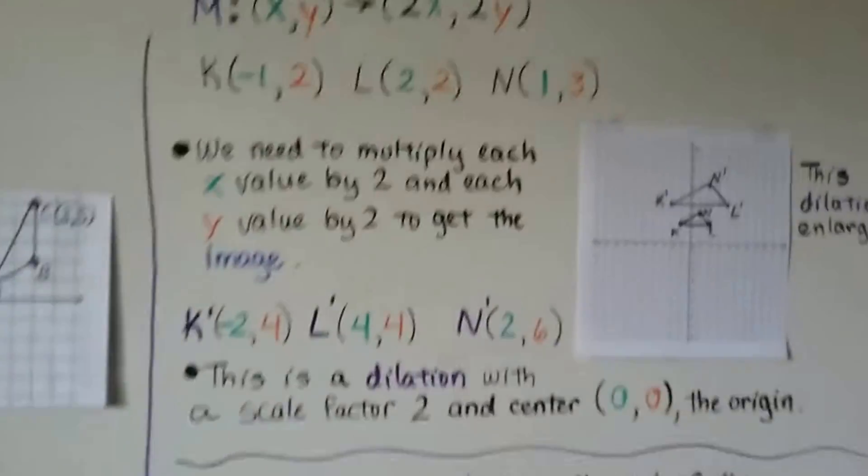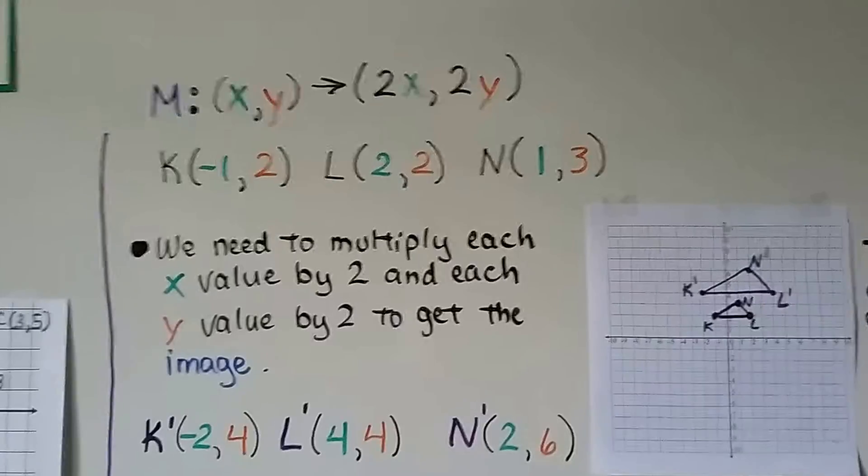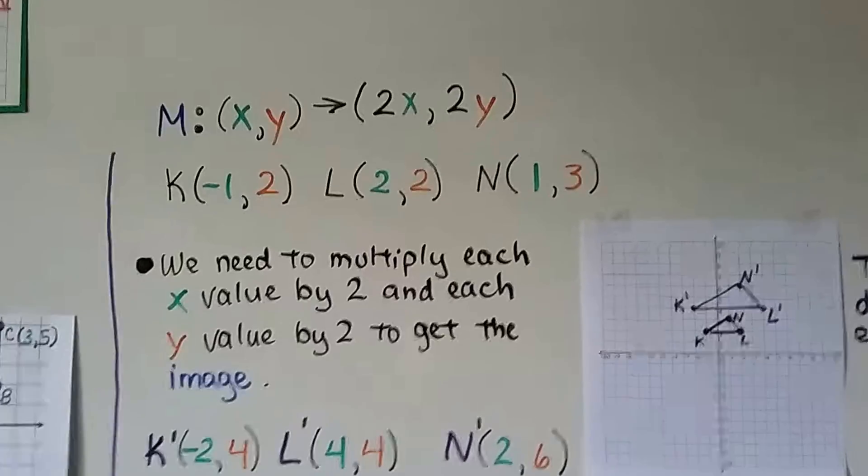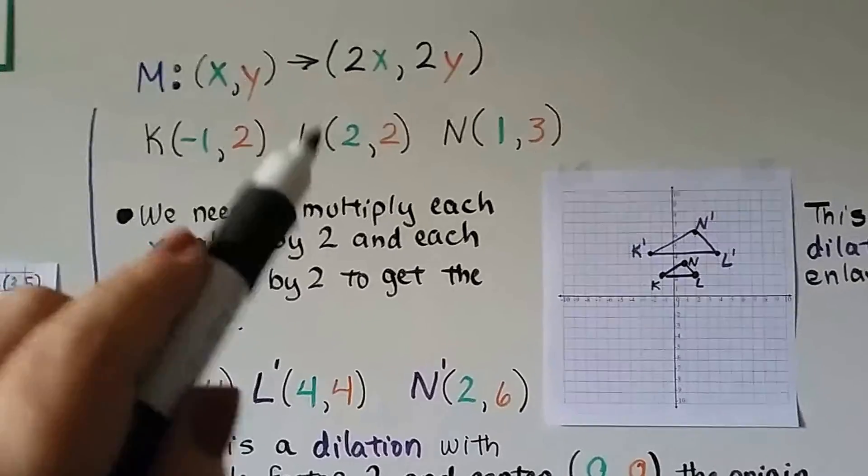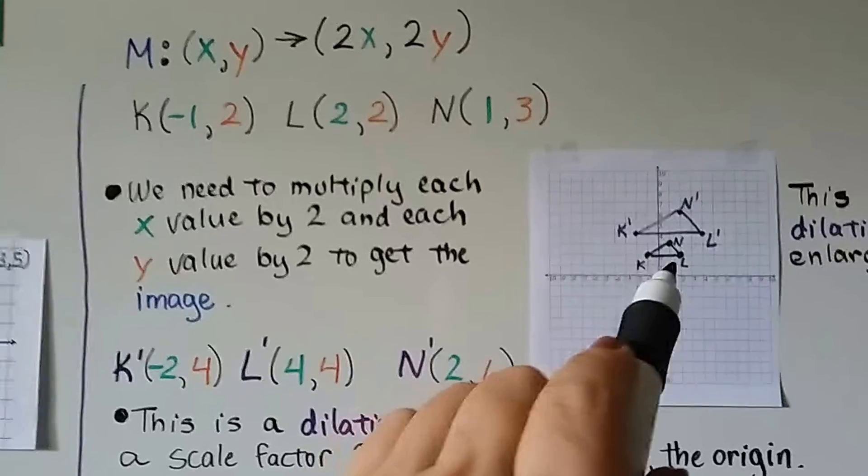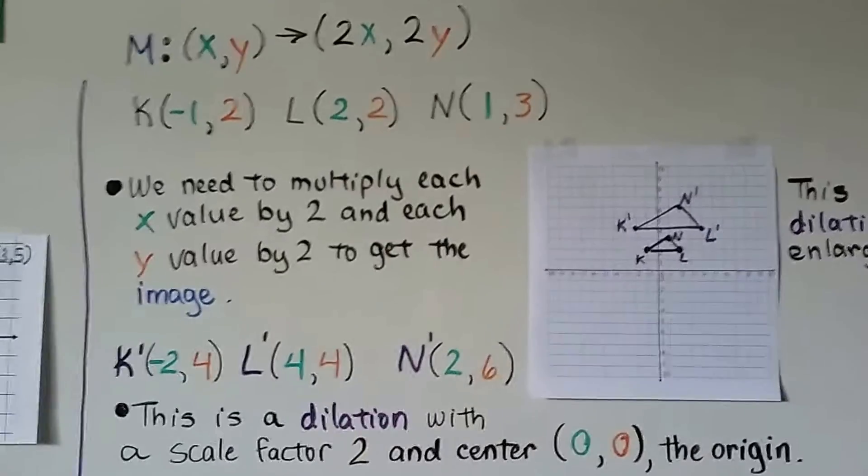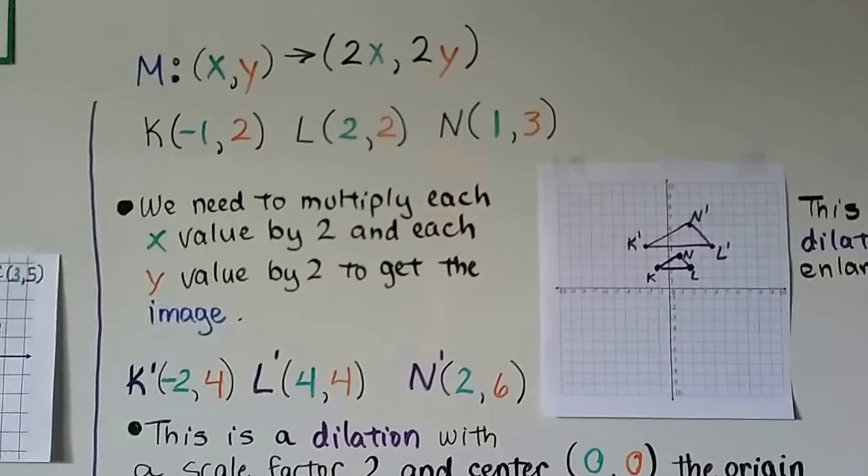For this one, we have transformation M. Our (x, y) is going to map to (2x, 2y). Well, that tells us we have to multiply the x value by 2 and the y value by 2. We have our preimage points, K, L, N. K, L, N, and it makes this little triangle here.